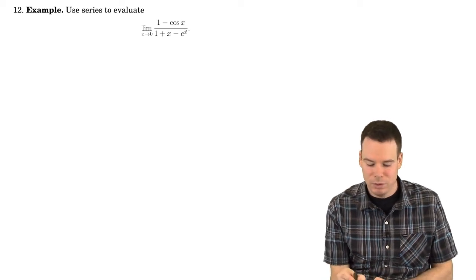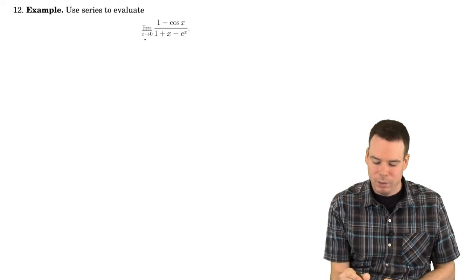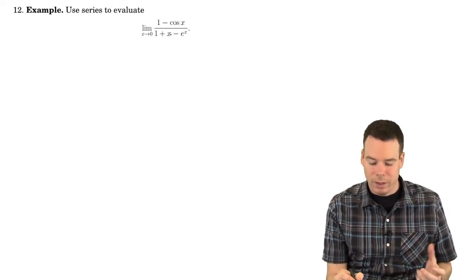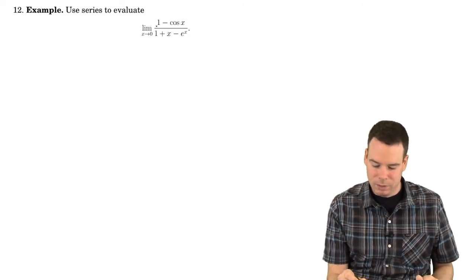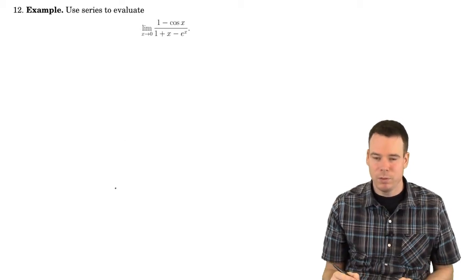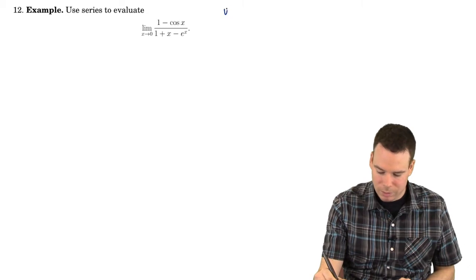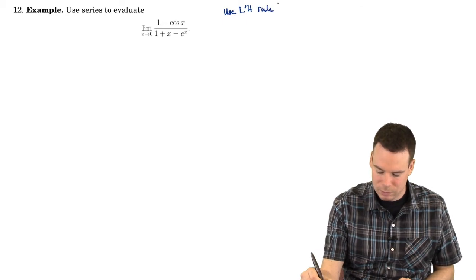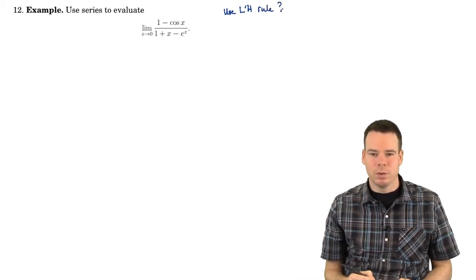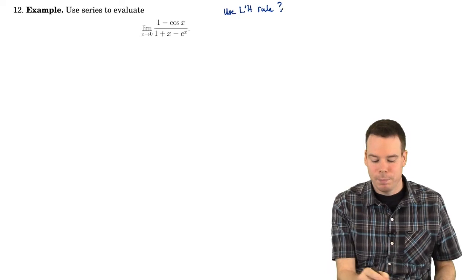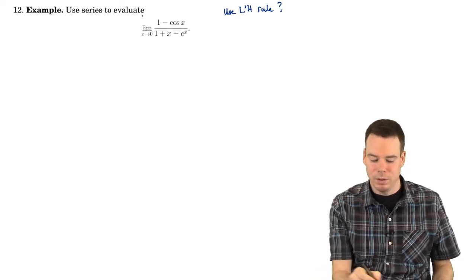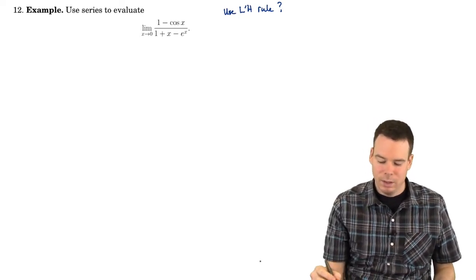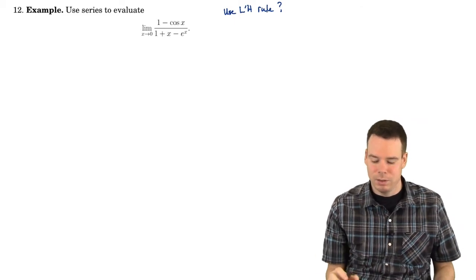In this next example, we're asked to use series to evaluate this limit. We're back to evaluating limits as x goes to 0. You notice that the top is 0 and the bottom is 0 — this is type 0 over 0. So you're probably thinking, why not use L'Hôpital's rule? Well, we certainly could, but the question is asking us to use series instead. We'll make the connection with L'Hôpital's rule at the end, so not to worry.